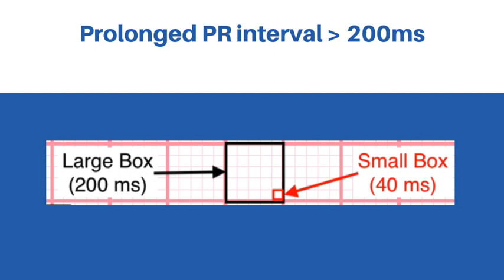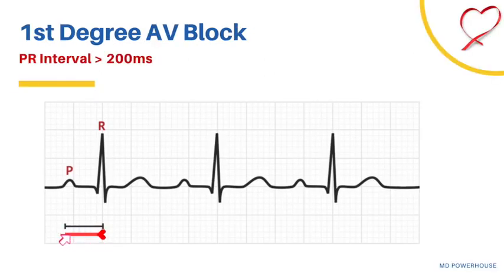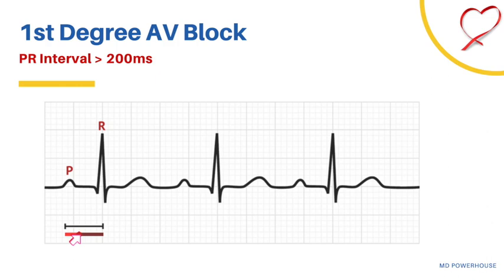Now let's take a closer look at the different types of AV block. The first one is first degree AV block. In a first degree AV block, you will have a prolonged PR interval — greater than 200 milliseconds, which is equivalent to more than five small boxes or more than one large box. If you look at the red cursor there with the heart, you can see that it is greater than one large box, confirming a prolonged PR interval.